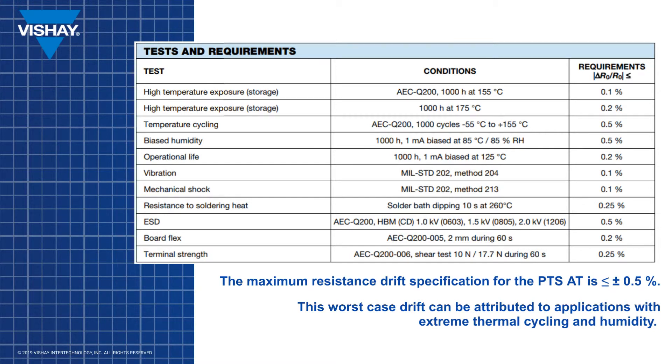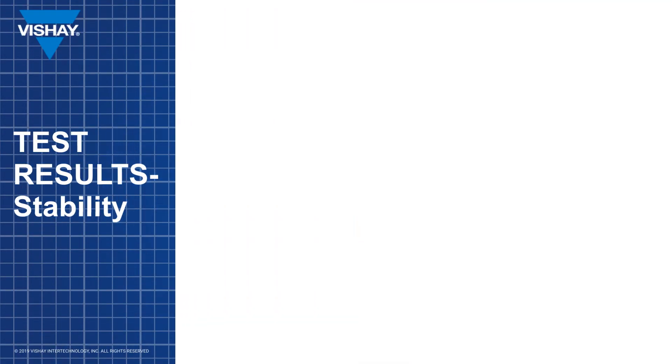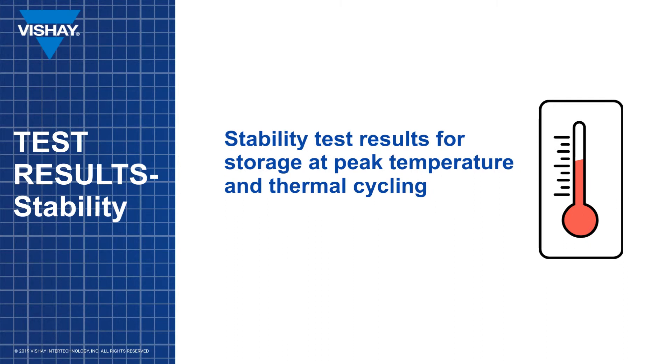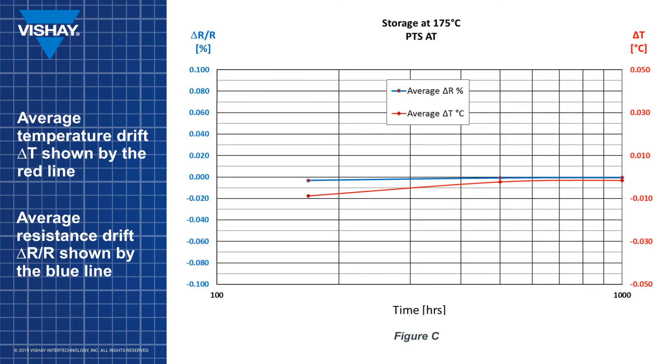However, for most applications, the typical performance is much better than the maximum specified stability. As previously stated, the PTS-AT is excellent in maintaining its temperature characteristics over time when subjected to extreme conditions. On average, the temperature drift specification for the PTS-AT after 1,000 hours storage at peak operating temperature of 175 degrees C is negligible at 0.01 degrees C as shown in figure C.